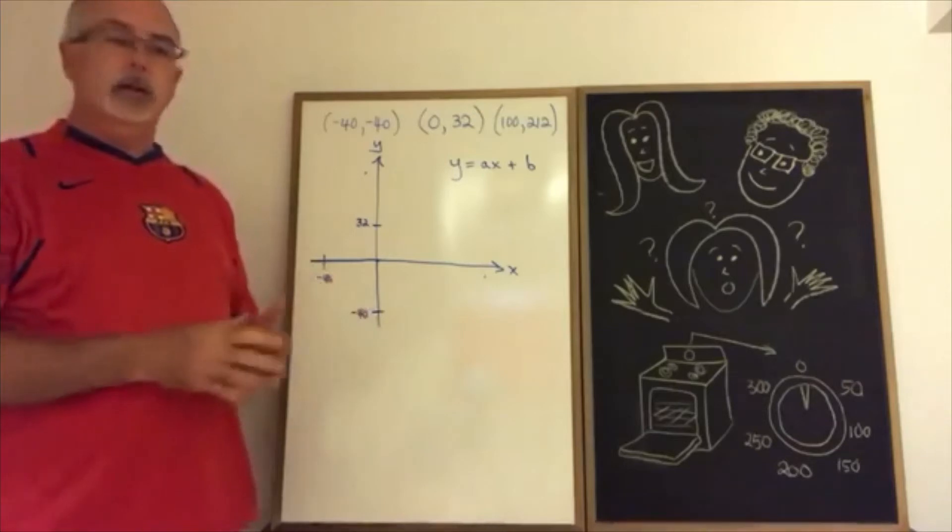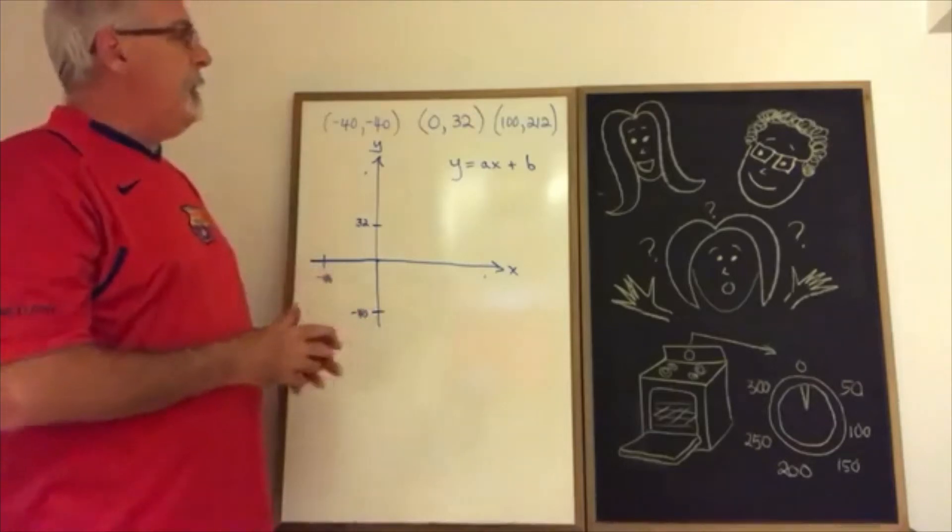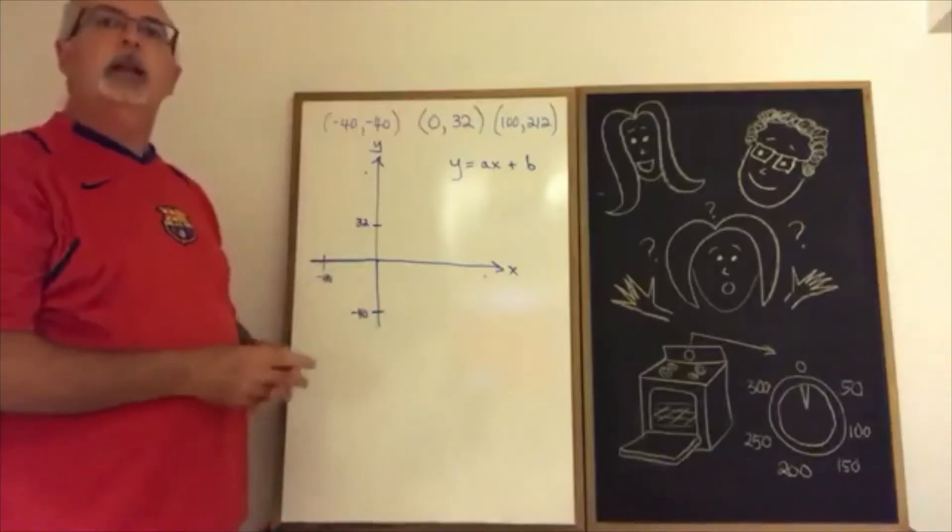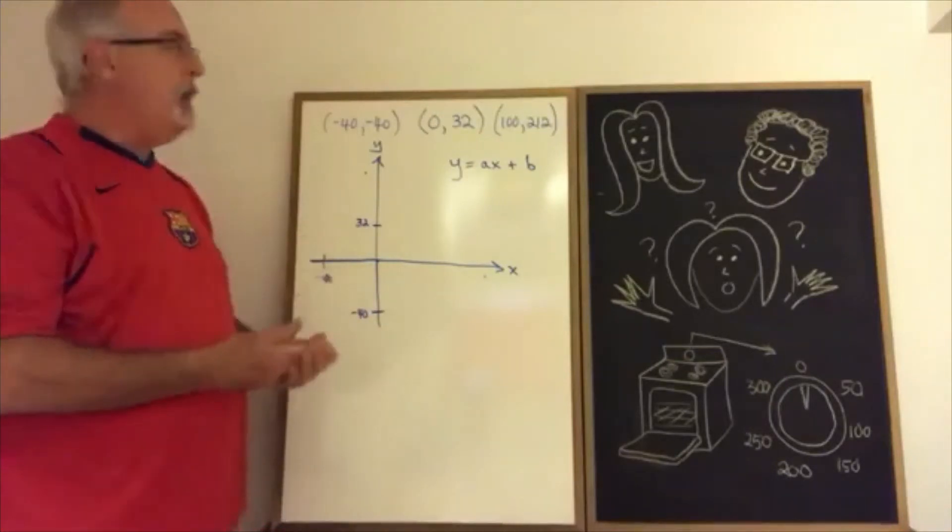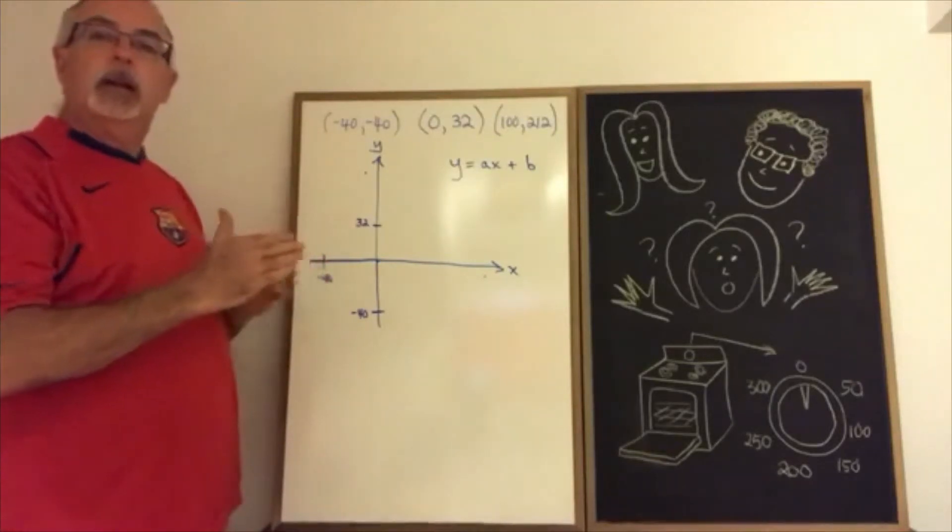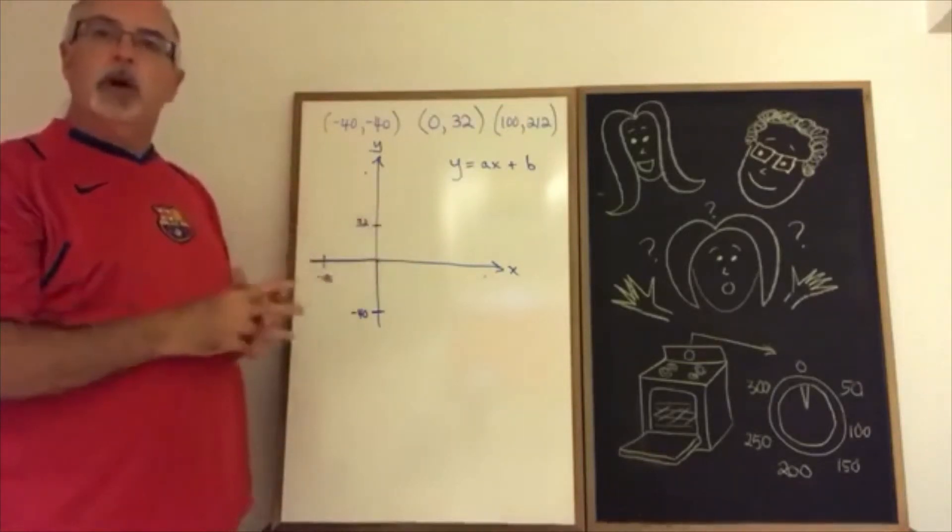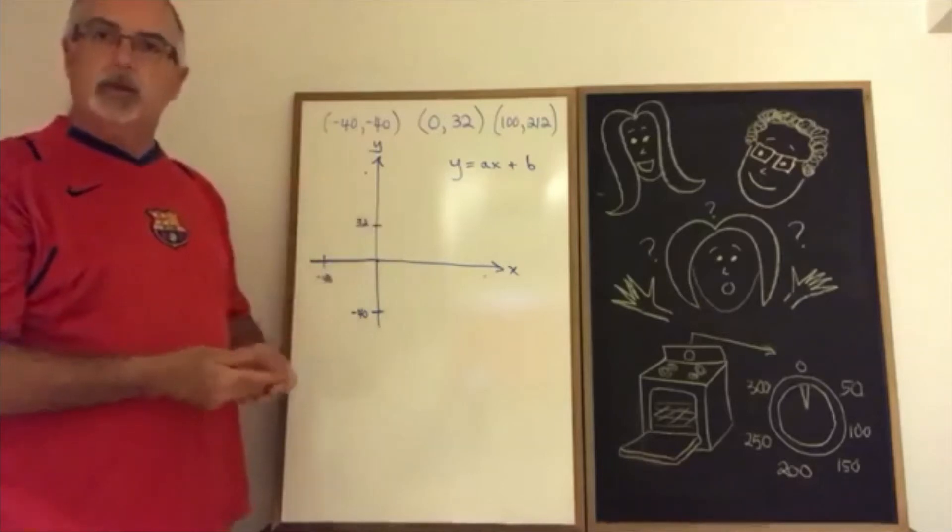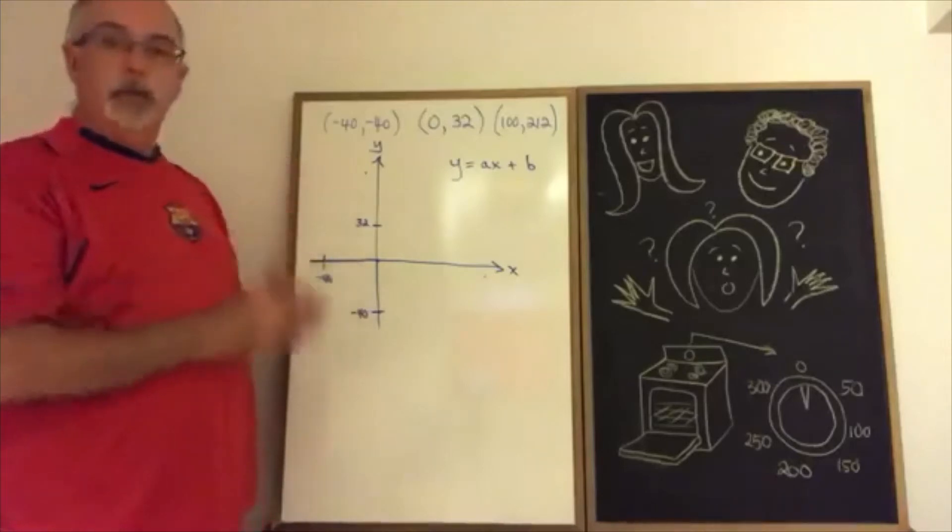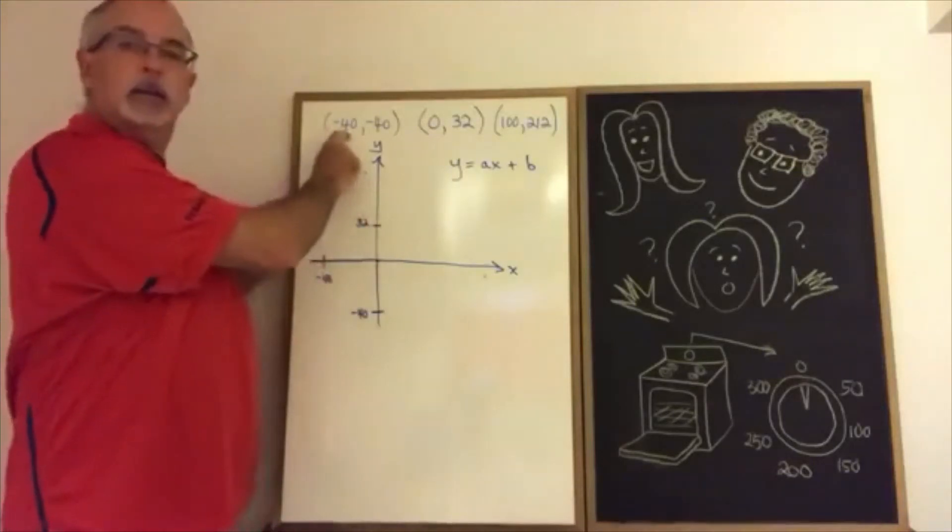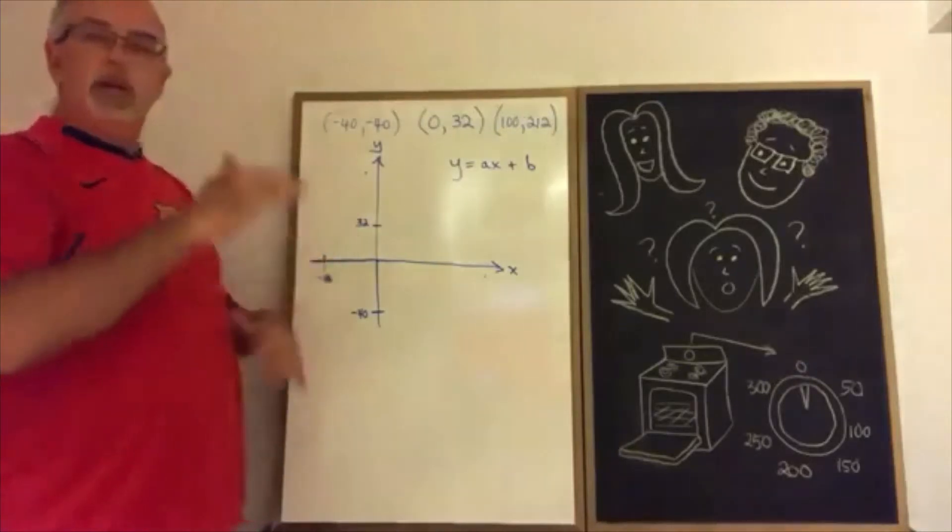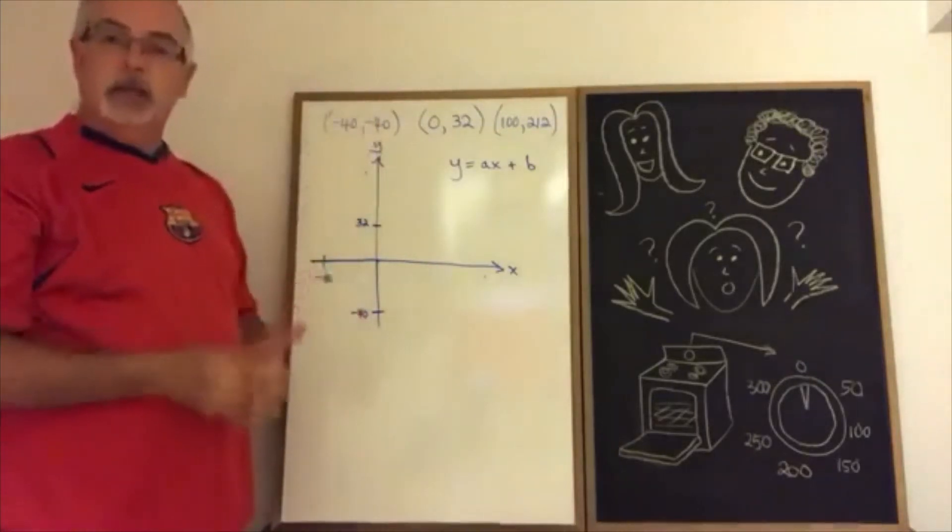Fortunately, I knew that the relationship between degrees Celsius and degrees Fahrenheit is a linear relationship, and I knew a few temperatures in both because there are some common temperatures that you hear more than once. I knew, for instance, that minus 40 Celsius and minus 40 Fahrenheit are equal. This is the temperature on the two scales where the number is actually the same.